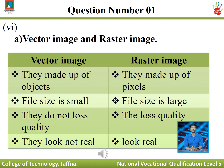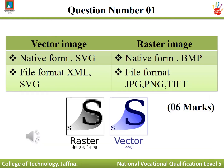Question number six, part A: vector image versus raster image. Vector images are made of objects; raster images are made of pixels. Vector image file size is small; raster image file size is large. Vector images do not lose quality; raster images lose quality. Vector images do not look real; raster images look real. Vector image native format is .SVG; raster image native format is .BMP.